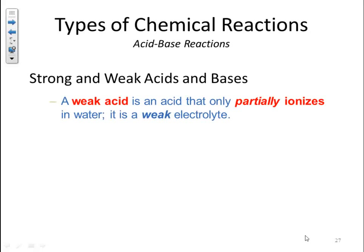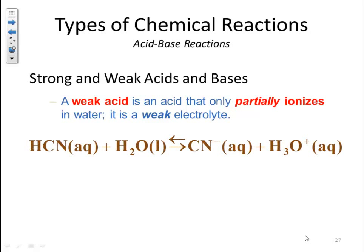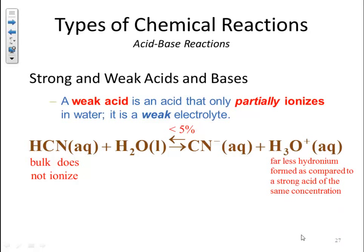A weak acid is an acid that only partially ionizes in water — it is a weak electrolyte. For example, HCN, hydrogen cyanide, is a weak acid. The bulk of it does not ionize and stays as a whole; less than 5% will actually break up into ions. So you have far less hydronium formed compared to a strong acid of the same concentration. If I had a 0.1 M solution of HCN and a 0.1 M solution of HCl, I'm going to have a far greater amount of hydronium in the HCl than in the HCN.